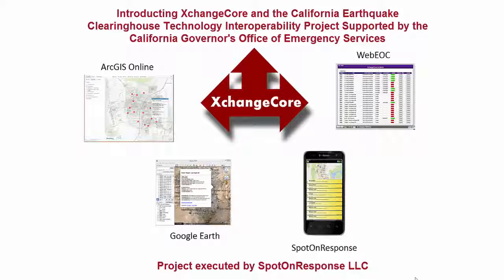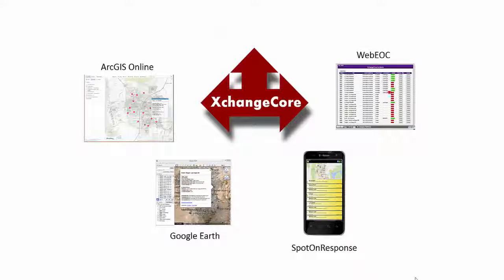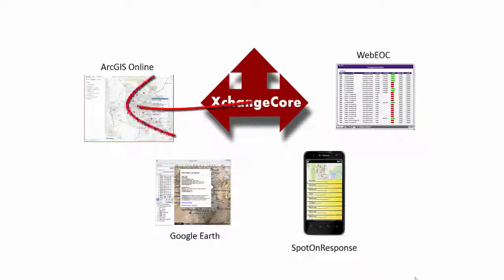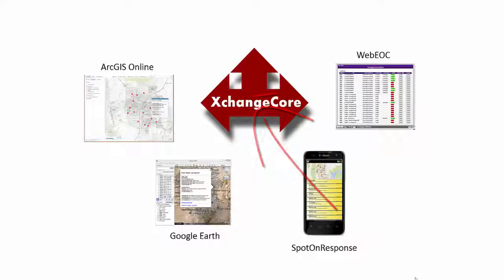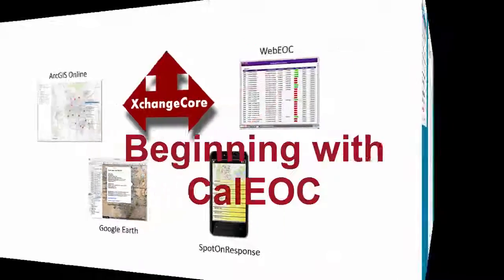Today we're going to take a look at Exchange Core — how Exchange Core serves to move information between WebEOC, the CalEOC implementation of it, and ArcGIS Online as our principal focus. We'll also see how that same data is exposed for use in Google Earth and the mobile app Spot on Response, and then from other applications back into WebEOC.